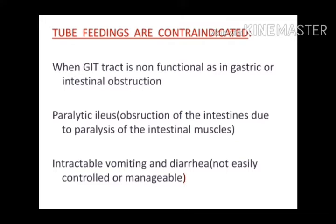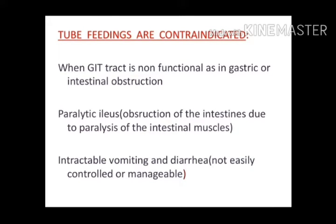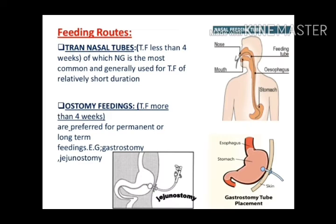What are the contraindications of tube feeding? The first contraindication is if the GI system is non-functional — meaning there is a problem with gastric motility or obstruction such that nutrition can't travel through the entire GI system. Also, if there is severe uncontrolled vomiting or diarrhea, we do not give tube feeding.